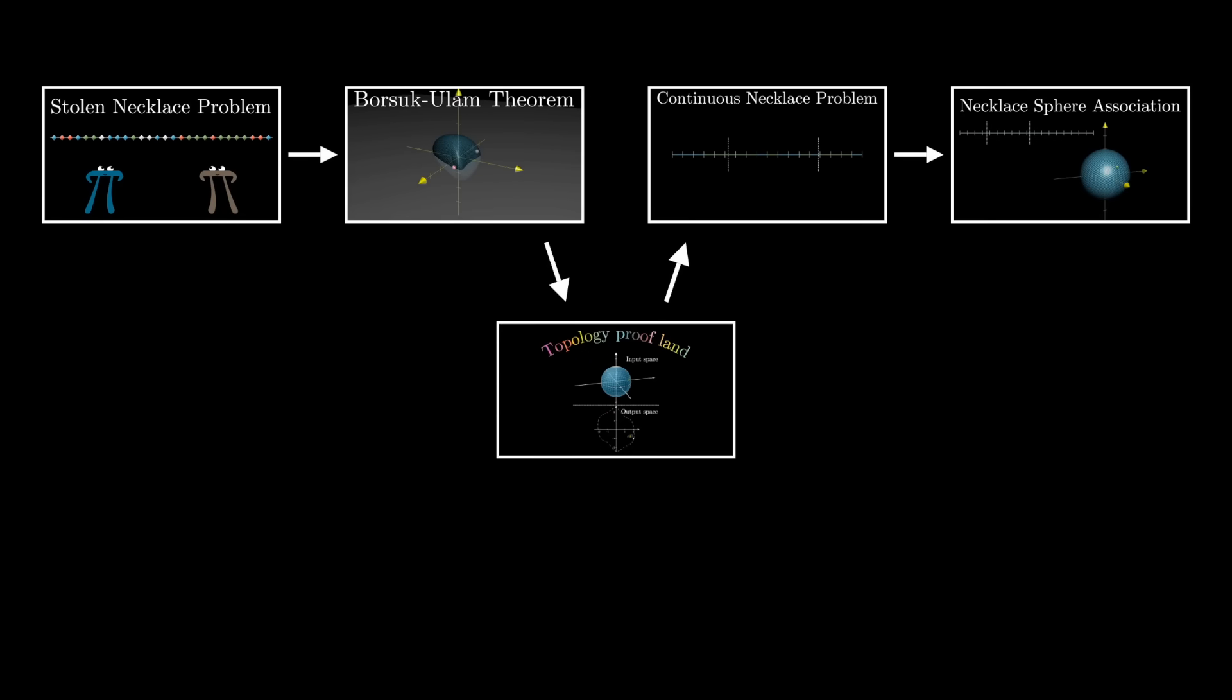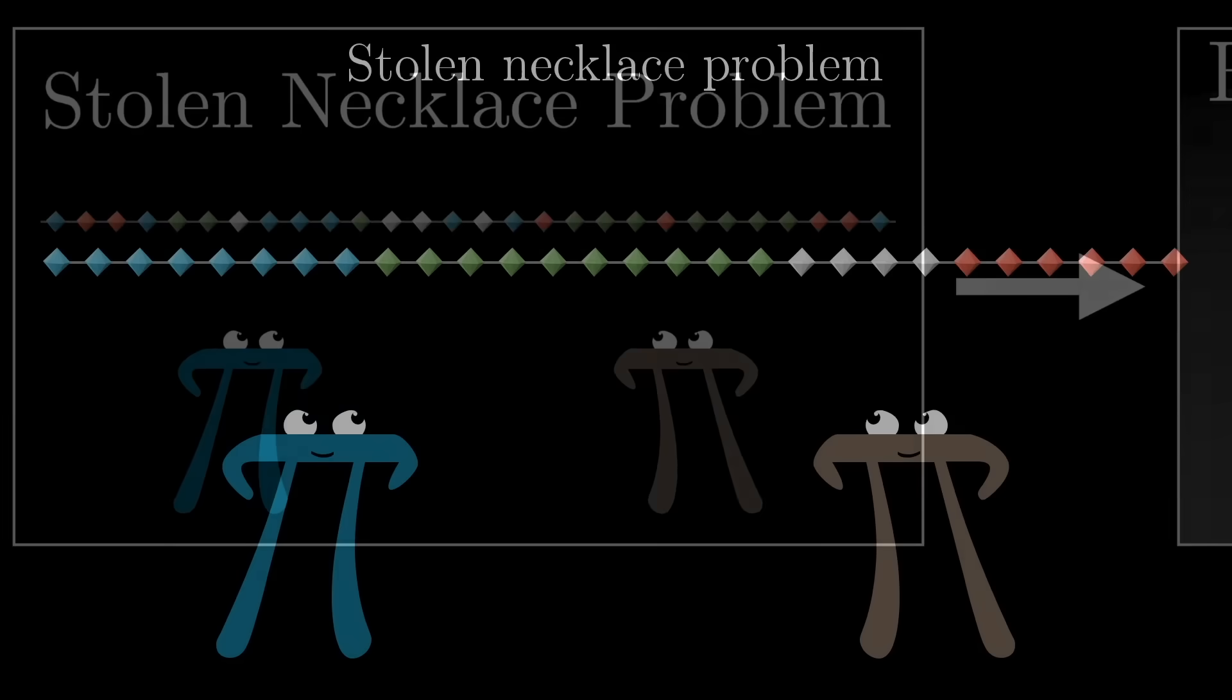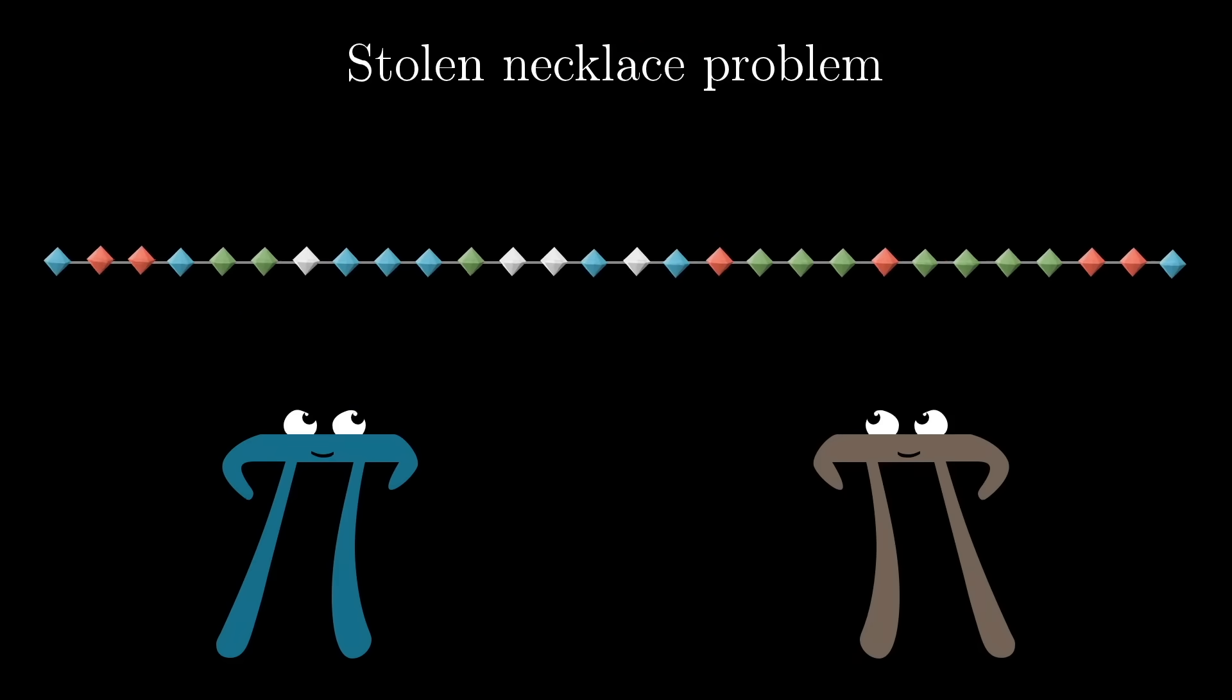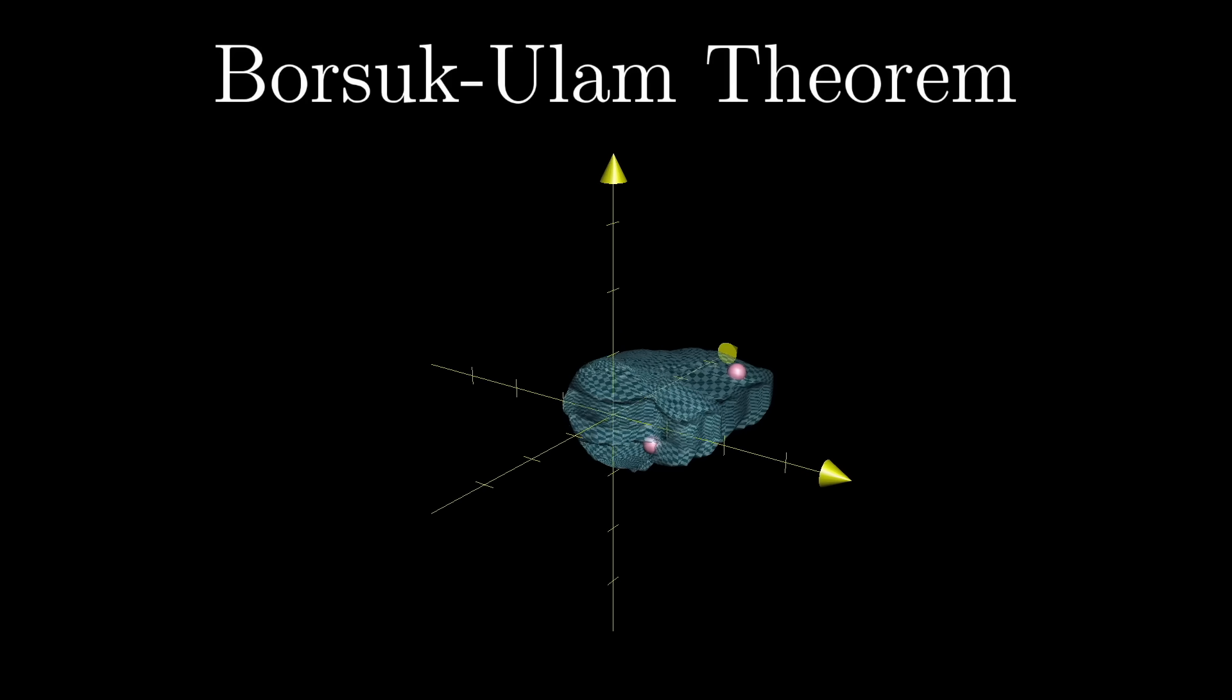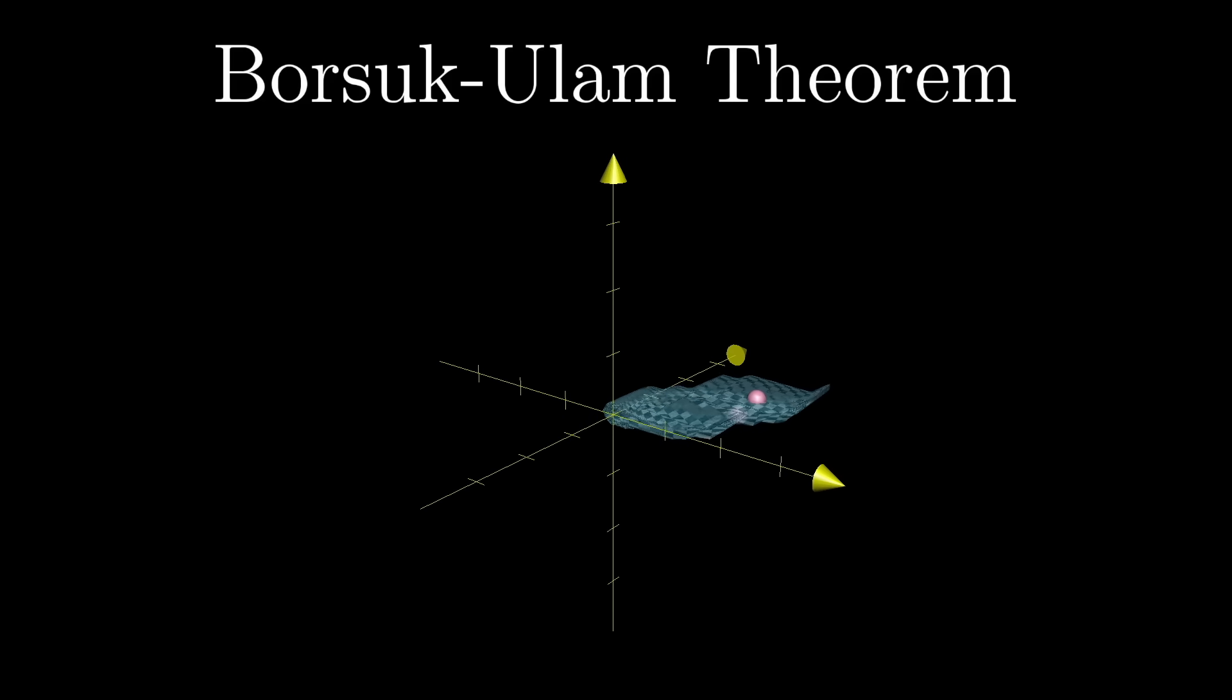It takes some time to set up. I have to introduce a fair division puzzle from discrete math called the stolen necklace problem, as well as a topological fact about spheres called the Borsuk-Ulam theorem. But trust me, seeing these two seemingly disconnected pieces of math come together is well worth the setup.